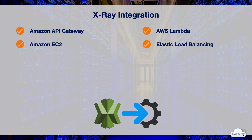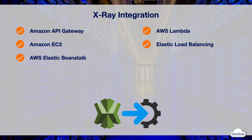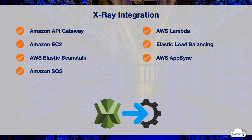X-Ray also works with Elastic Load Balancing — you can configure load balancers to add a trace ID to incoming HTTP request headers to track requests from clients to target services. You can configure the X-Ray daemon to automatically run on EC2 instances in your Elastic Beanstalk environment. You can enable and trace requests using X-Ray for AWS AppSync APIs. X-Ray is integrated with Amazon SQS to trace messages passed through an SQS queue, and with AWS Step Functions to trace and analyze requests, visualize state machine components, identify performance issues, and troubleshoot errors.